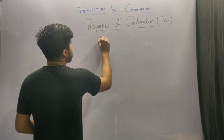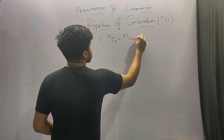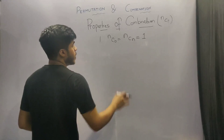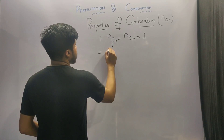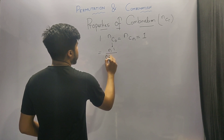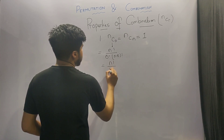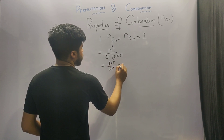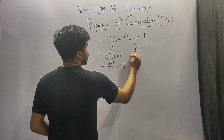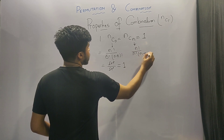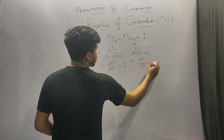The first property of combination says that nC0 is equivalent to nCn, which is finally equivalent to 1. For the first case, nC0 gives n factorial upon 0 factorial into n minus 0 factorial, which is n factorial by n factorial, equal to 1. For the second case, nCn gives n factorial upon n factorial into n minus n factorial, again equal to 1.